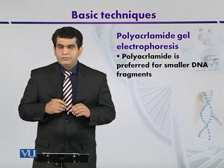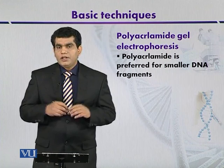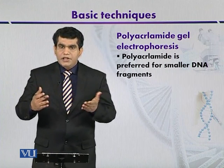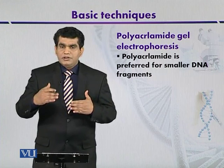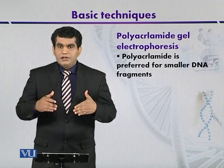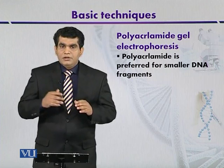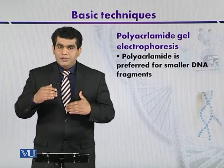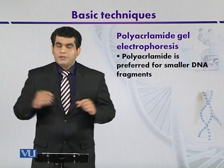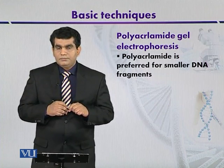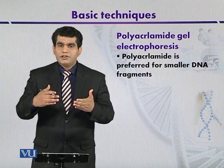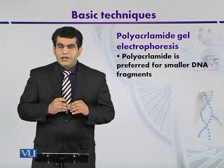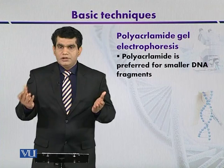Ethidium bromide is a stain — a chemical — that is used to dye the gel. Ethidium bromide can intercalate between the bases of double-stranded DNA. When it is illuminated with UV light, the bands of DNA become visible as an orange color.